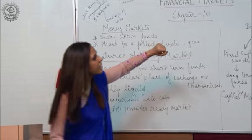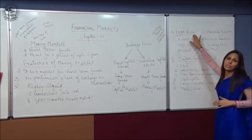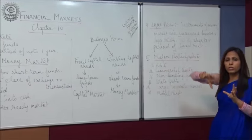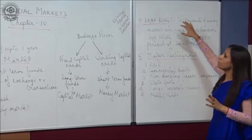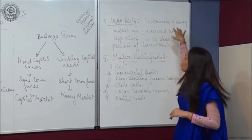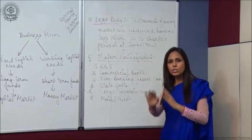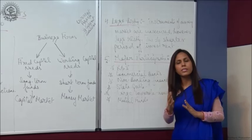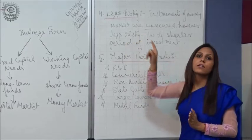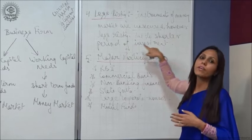The fourth feature is that the money market is considered to be less risky. The instruments of money markets are unsecured, yet they are less risky. They are less risky because of the shorter period of investment.